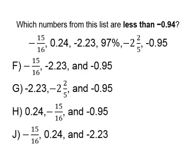The problem states: which numbers from this list are less than negative point nine four — or negative ninety-four hundredths. Let's look at the numbers on our list. We have negative fifteen over sixteen, point twenty-four, negative two point two three, ninety-seven percent, negative two and two-fifths, and negative point nine five. Because all of these numbers aren't decimals, it may seem to throw you off, but don't let it.